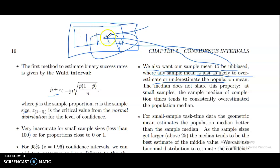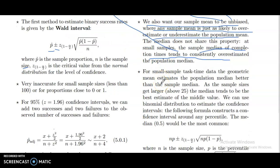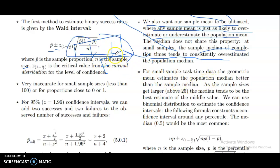The median does not share this property. At small samples, the sample median of completion times tends to consistently overestimate the population median. For small samples, task time data uses the geometric mean to estimate the population median better than the sample median.